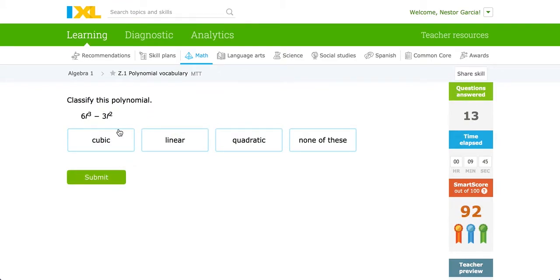Now we're being asked to classify by degree. And here we see a power of two and a three, the higher one being a three. Therefore this is cubic.